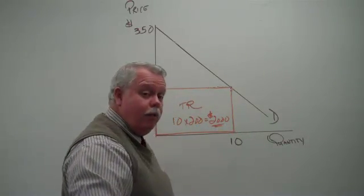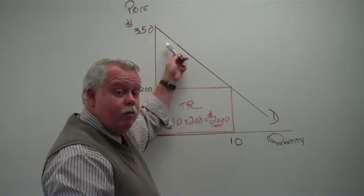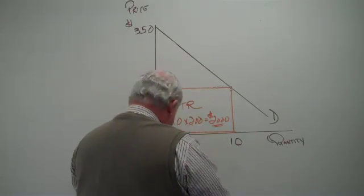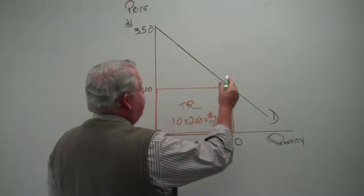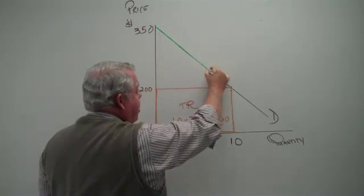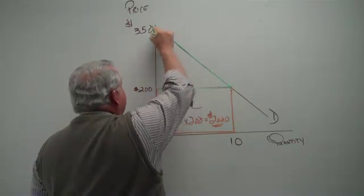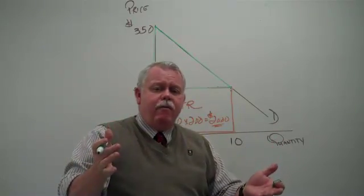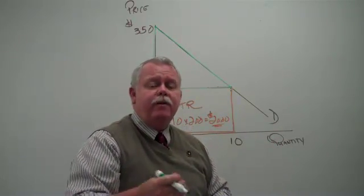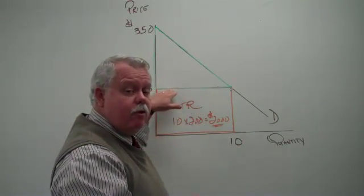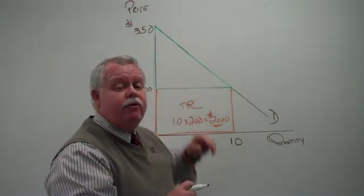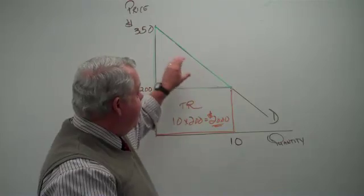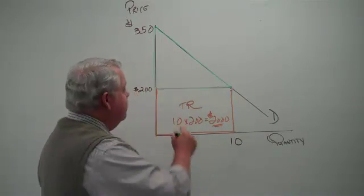But remember, buyers, some of them, were willing to spend more money. And so now, if we take a look at this, the area of this triangle represents conceptually the maximum amount of money all of the customers were willing to spend when they came in the store, but because the price was fixed at $200 for every customer, many of them didn't spend as much as they were prepared to. So the area of this triangle is where we're really focusing, and the area of this triangle is the consumer surplus.